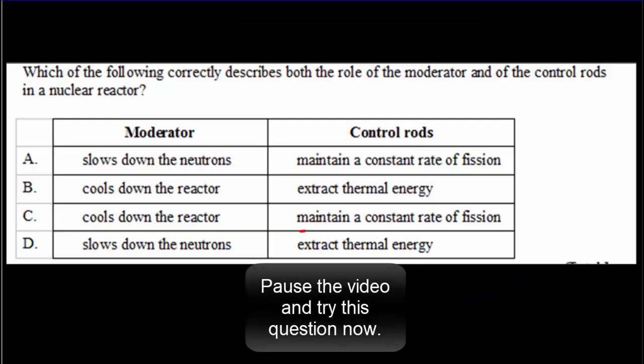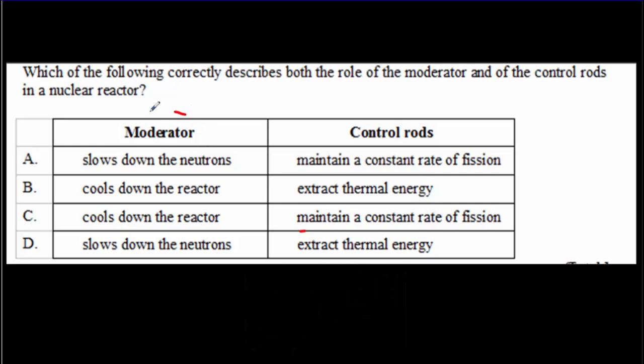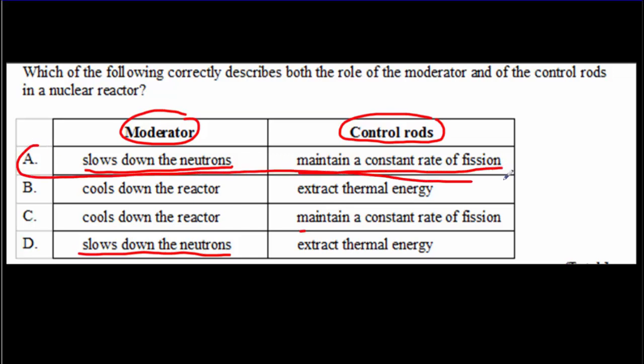I have a few IB questions for you. Here's the first one. Pause the video. Read it over. Try it out yourself. Come back for the answer. So the role of the moderator is to slow down the neutrons. If we slow down the neutrons, then they're not going to be absorbed by the uranium-238. The role of the control rods is to maintain that constant rate of fission. So the correct answer here is A.